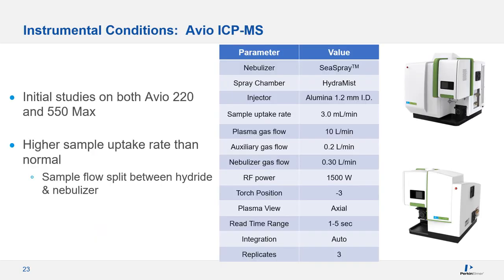Initial Hydromist work was performed on the Avio 220 and 550 Max ICP OES by field application scientists. A Sea Spray nebulizer was used for very fine aerosol and good sensitivity, along with the 1.2 mm alumina injector. Sample uptake rate was 3 mL/min — double the previous rate — because flow is split, giving approximately 1.5 mL/min to each side. Due to extra flow entering the spray chamber and plasma, plasma flow was increased to 10 L/min for greater stability.